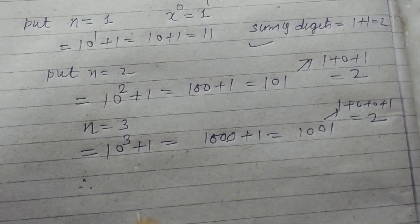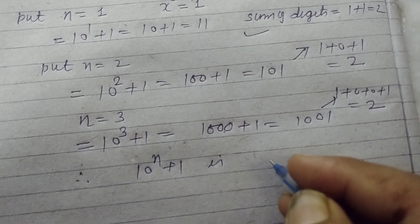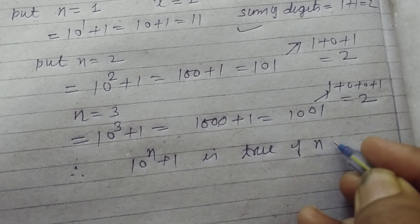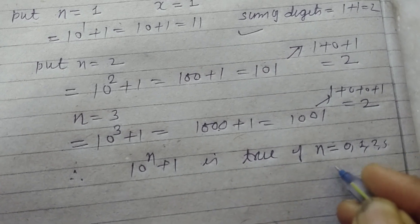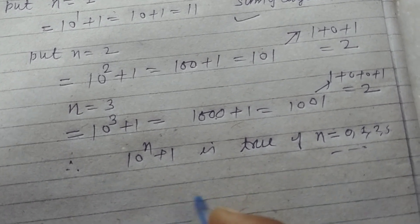Therefore we can say that 10^n + 1 is true for n = 0, 1, 2, 3, and so on, and the sum of the digits will be 2.